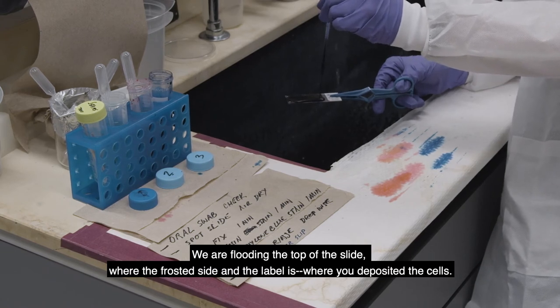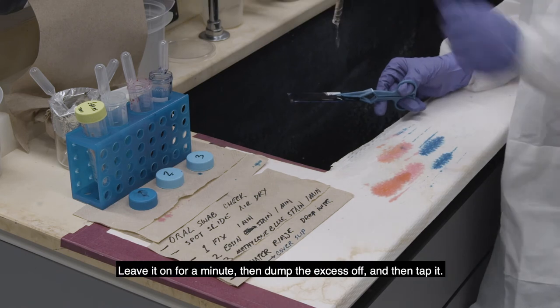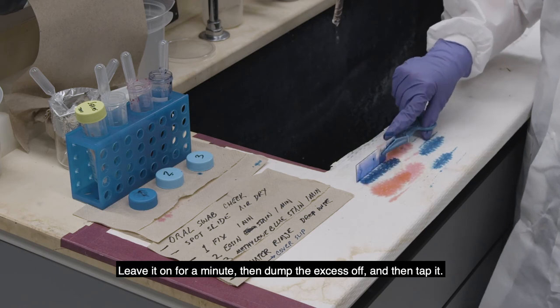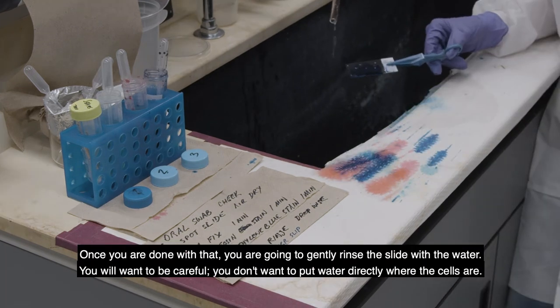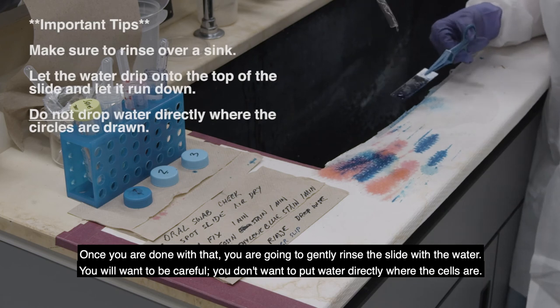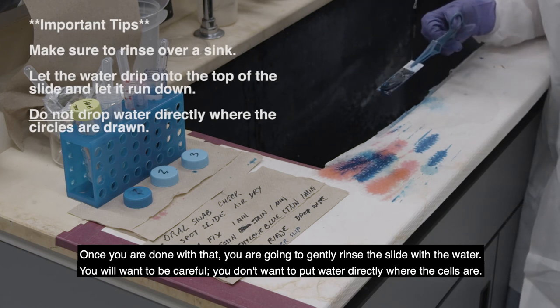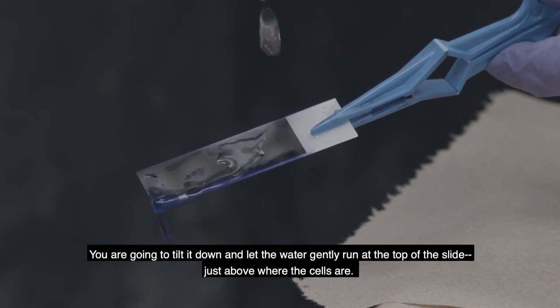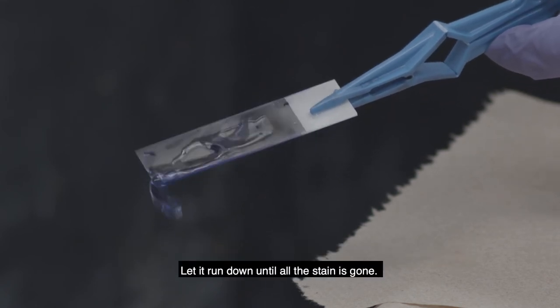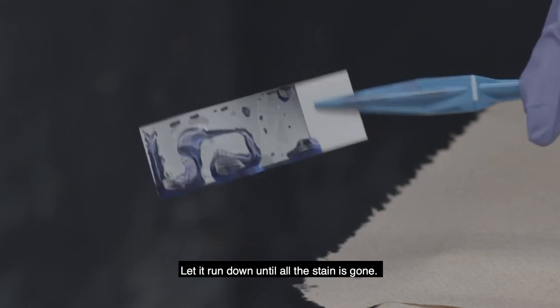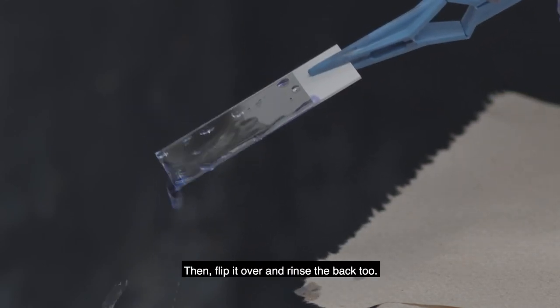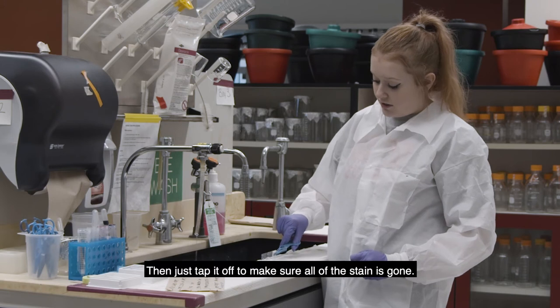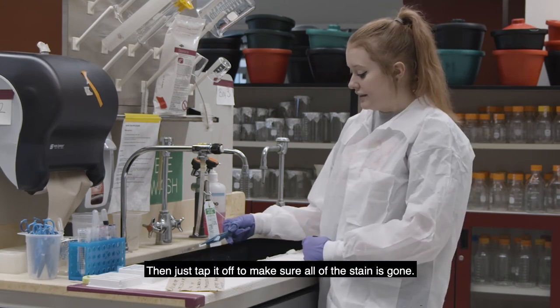And then once you're done with that, you're going to gently rinse with the water. But you want to be careful because you don't want to put the water directly where the cells are. So you're going to kind of tilt it down and let the water gently run at the top of the slide, just above where the cells are. And then let it kind of run down until all the stain is gone. And then flip it over and do the back too. And then just tap it off to make sure that all the stain is gone.